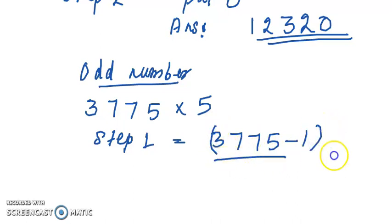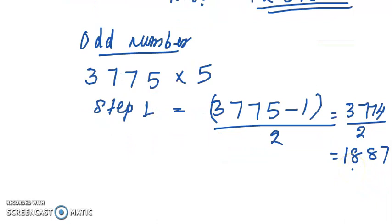That is 3774 by 2, so that is 1887. Then what will be the next step? We are putting, we put the number 5 at the last with that number.